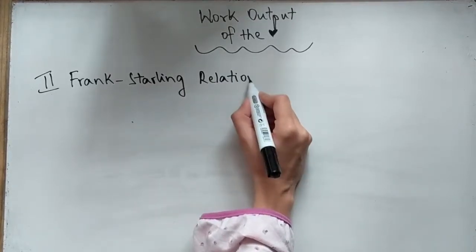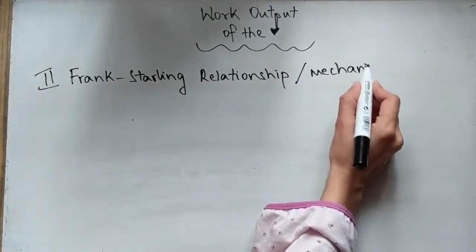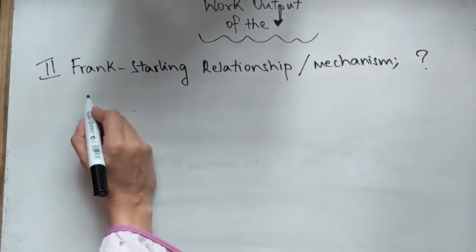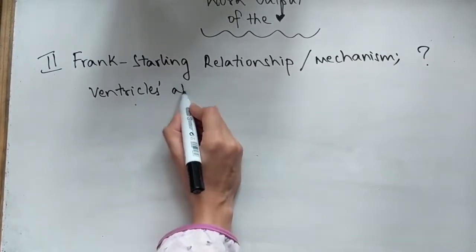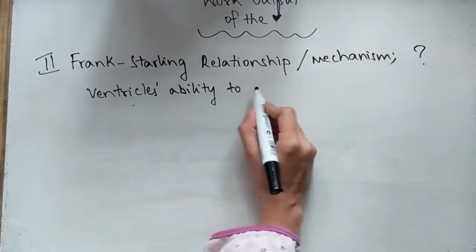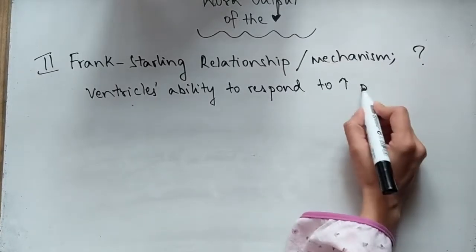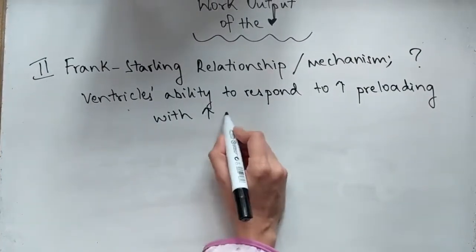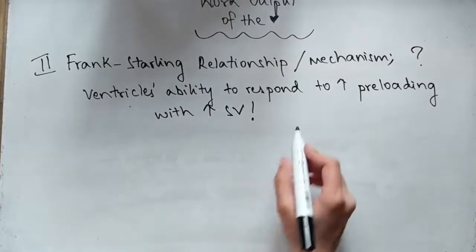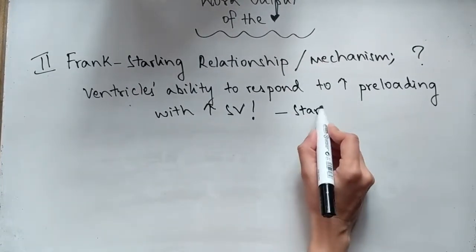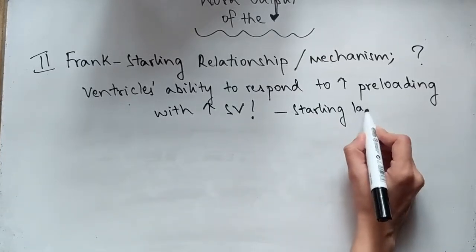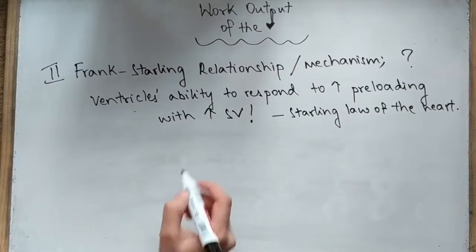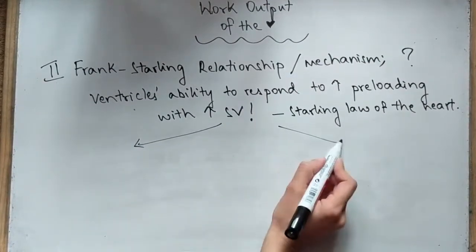The Frank-Starling mechanism, also known as the Starling law of the heart, is the ventricle's innate ability to respond to increased preloading with an increased stroke volume. It's like a compensatory mechanism. We have two types of changes to do with the length of time: short-term and long-term changes.